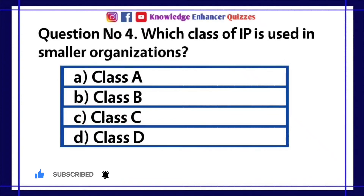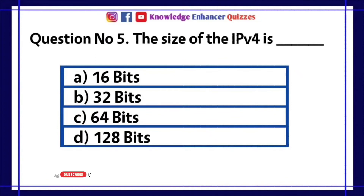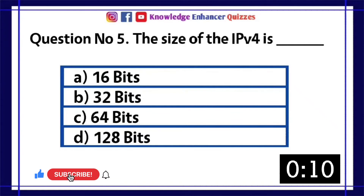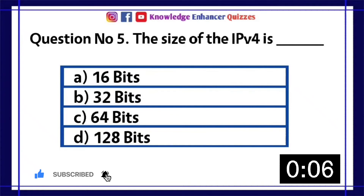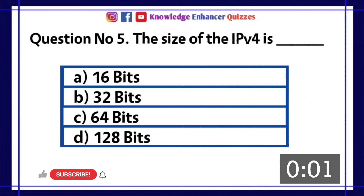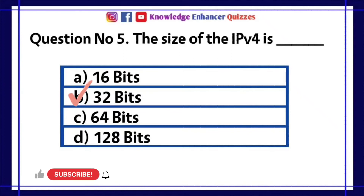Question number 5: The size of the IPv4 is — A. 16 bits, B. 32 bits, C. 64 bits, D. 128 bits. Option B is the right answer.